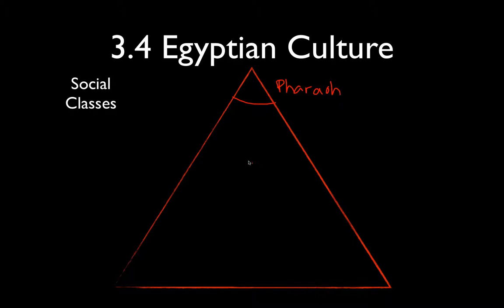Underneath the pharaohs you have the upper class, which consists of the priests, the pharaoh's court, and the nobles who had large estates — pretty much anybody who had a lot of money.